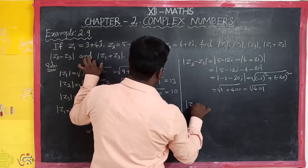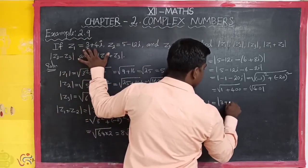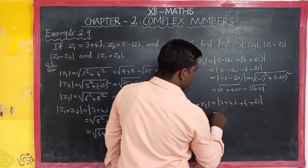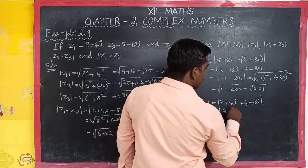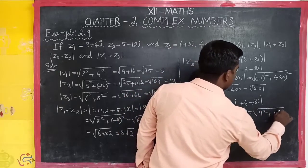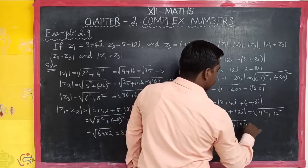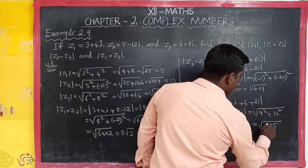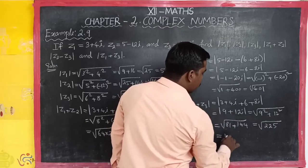Next, modulus of z1 plus z3. Modulus of z1 value 3 plus 4i plus z3 value 6 plus 8i. Adding: 3 plus 6 equals 9, 4 plus 8 equals 12i. So we get 9 plus 12i. The modulus is square root of 9 squared plus 12 squared — square root of 81 plus 144 — square root of 225. Since 15 times 15 is 225, this equals 15.